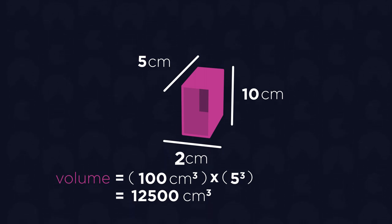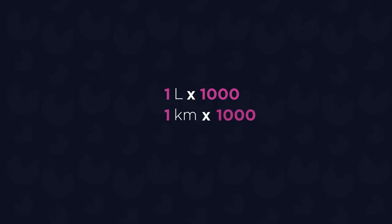Scale factors also apply to converting units. The metric system is a great example of this and is likely something you will be familiar with. For example, 1 litre can be converted into millilitres by multiplying the volume by a scale factor of 1000. Another example is converting kilometres to millimetres. Say we have a distance that is 1 kilometre long. We would need to multiply 1 by 1000, as there are 1000 metres in a kilometre.